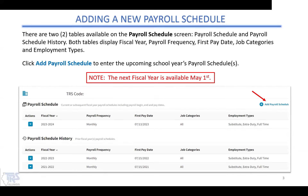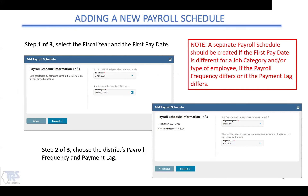Once you click on 'Add Payroll Schedule,' you will go through three steps. On the first step, you are selecting the fiscal year and the first pay date. You should have separate payroll schedules if there are different first pay dates. For example, administrators usually start getting paid around July 15th, so they should be on one payroll schedule, and teachers who start getting paid in August should have a different one. If any job categories have a different first pay date, payroll frequency, or payment lag, you should have separate schedules for those categories.